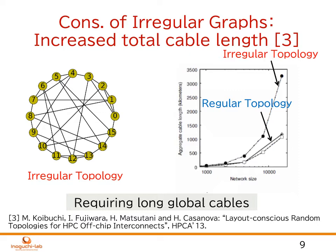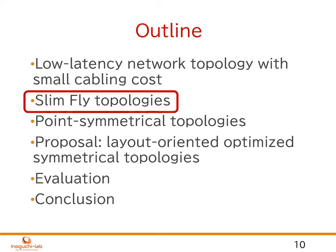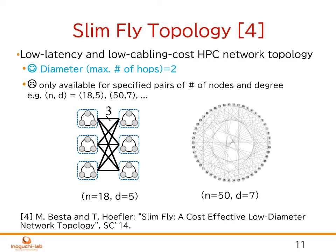We will introduce the low-diameter and scalable slim-fly topology. The recently proposed slim-fly topology is a low-latency and low-cabling-cost network topology for high-performance computing systems. The bottom figures show the construction of 4, 18, and 50 switches. The most powerful aspect of this topology is that it can keep the maximum number of hops, called diameter, of 2. However, the negative aspect is that slim-fly can only be used for specified pairs of number of nodes and degree, so we cannot use slim-fly for arbitrary network sizes.